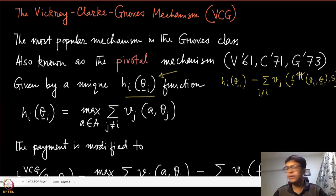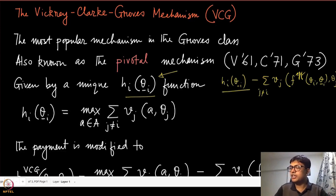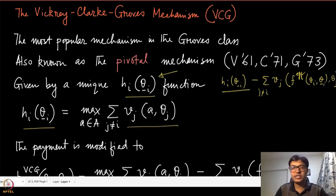Based on different h_i(θ_{-i}), you can get different mechanisms and different payment rules. In the case of Clark's pivotal rule or the VCG mechanism, h_i(θ_{-i}) is the maximum over the sum of valuations of all agents except agent i.